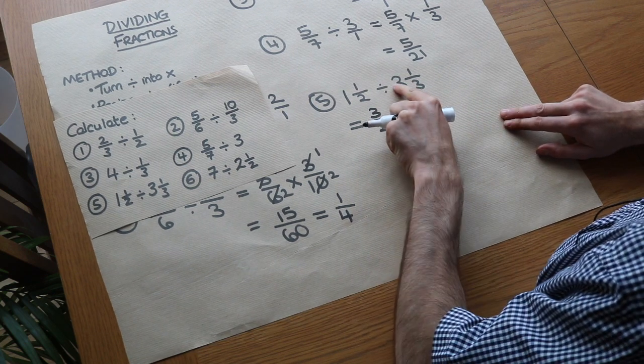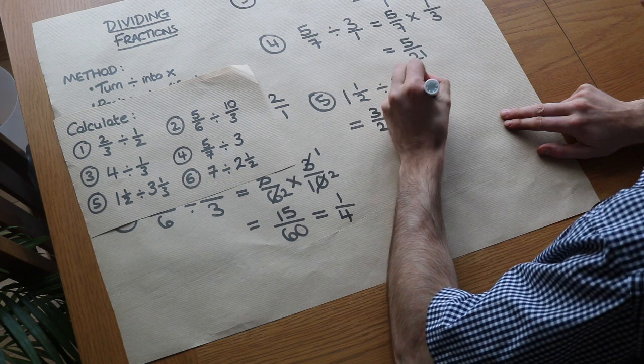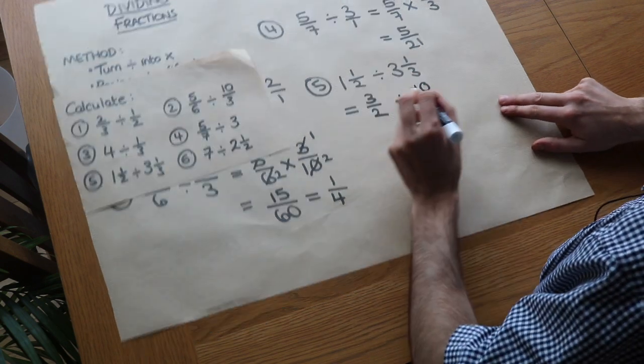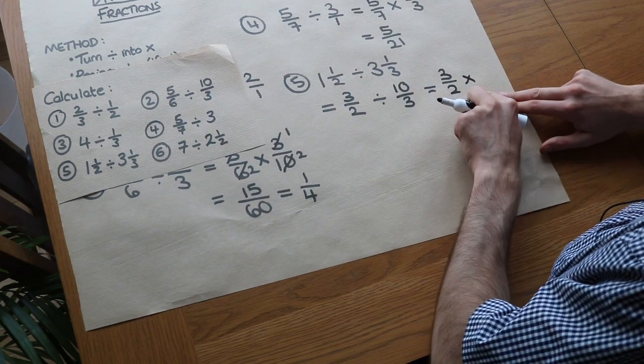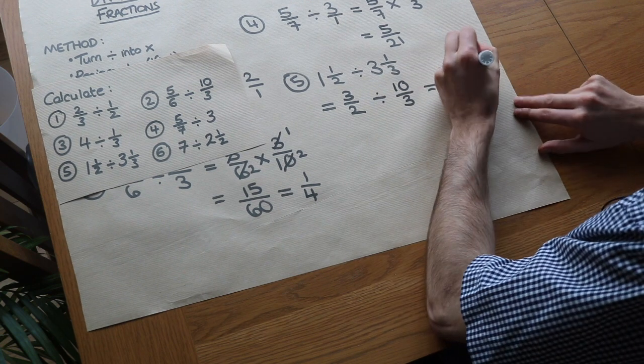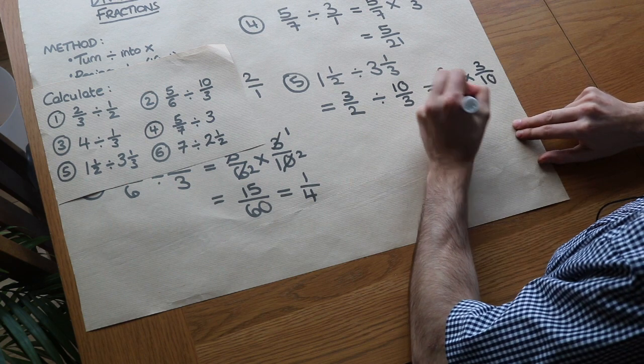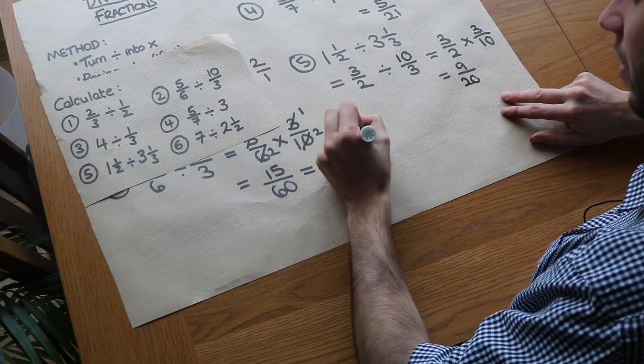Divided by 3 and 1/3. Well, 3 times 3 is 9, plus 1 is 10. So the numerator is 10, and then you use 3 as the denominator. Then we can do our usual thing: keep the first fraction as it is, turn the divide into a times, and 10/3 we flip to get 3/10. So 3 times 3 is 9, 2 times 10 is 20.